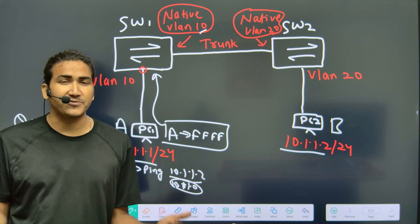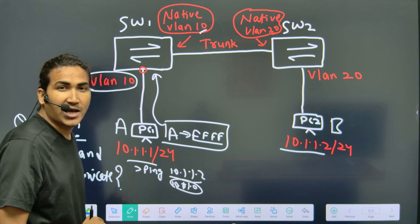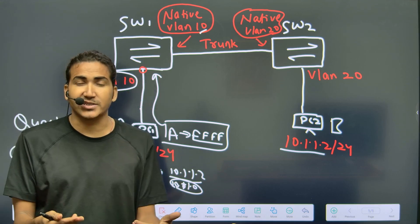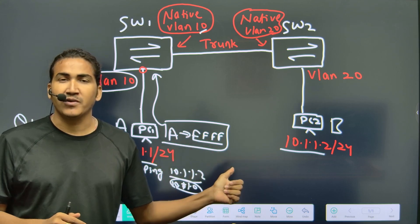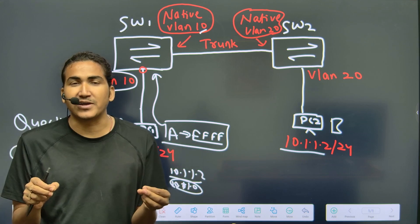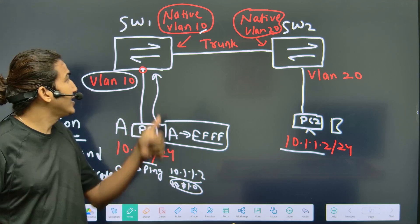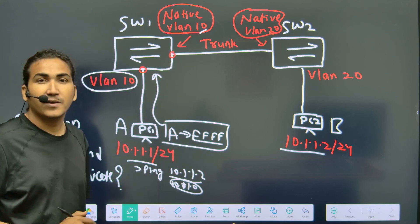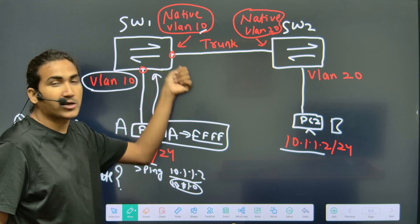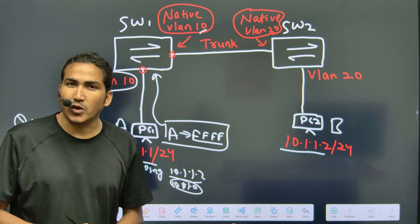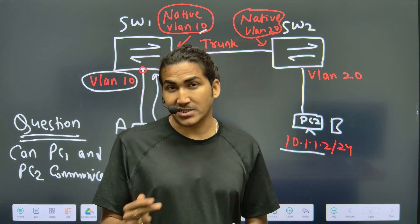Switch 1 receives the ARP request on an interface that is a member of VLAN 10. Since the destination is broadcast, Switch 1 floods it within VLAN 10 out all interfaces except the receiving one. There is one trunk link that carries traffic for multiple VLANs, so it is also part of VLAN 10. Normally, when a switch forwards traffic on a trunk link, it performs tagging — except for the native VLAN.